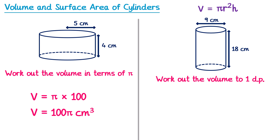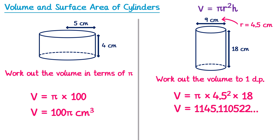For the next question we do volume equals π, and the radius this time is not given — we've been given the diameter at 9. So if the diameter is 9, the radius must be half of this at 4.5. So it's times 4.5 squared, and the height is 18, so multiplied by 18. We type all of this into the calculator, and this question says to give it to one decimal place, which would be 1145.1.